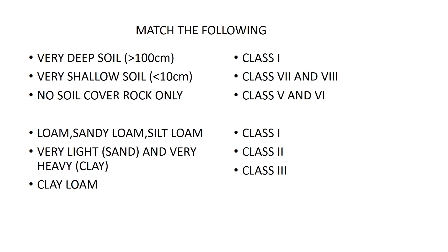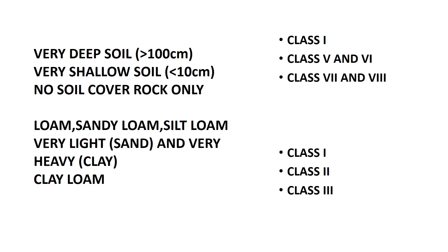There are three conditions in Column A — very deep soil, very shallow soil, and no soil cover with rock only — and three options in Column B to match. The second question also has three statements including loam, sand loam, and silt loam, and three classes in Column B to match. Match your answers and check them with the provided answers.